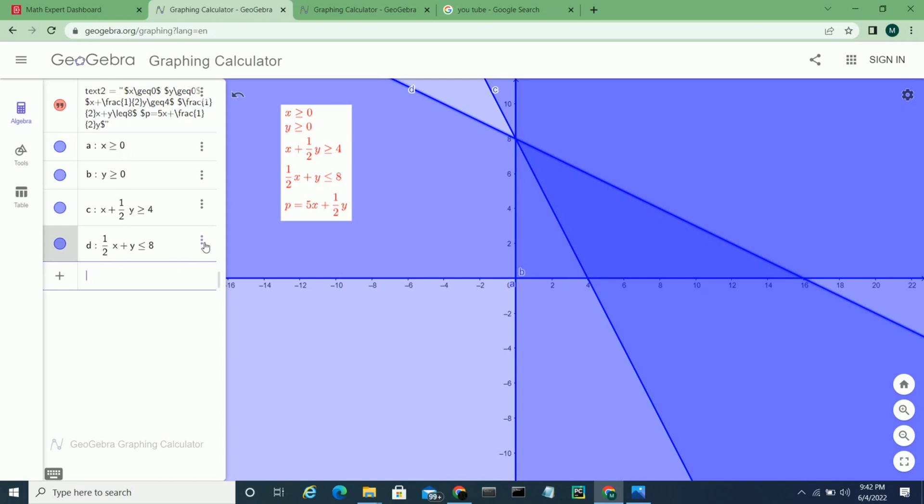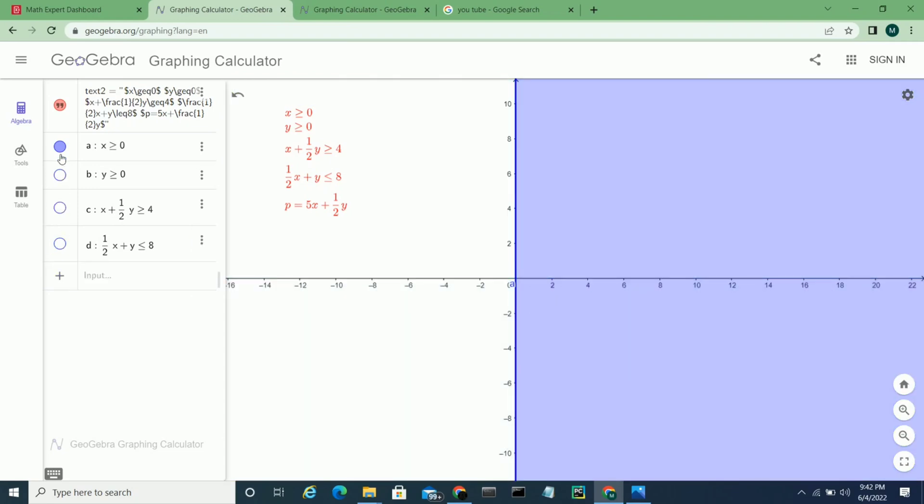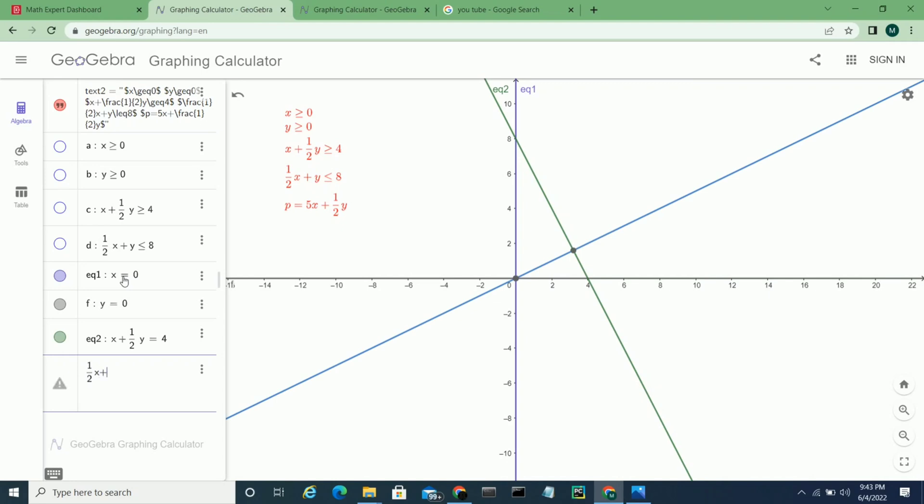Remove this graph for now. Now we will plot the same conditions without inequality. So x equal to 0, first. Second is y equal to 0. Here we can see in the plot. Third is x plus 1/2 y equal to 4, so the line is given.